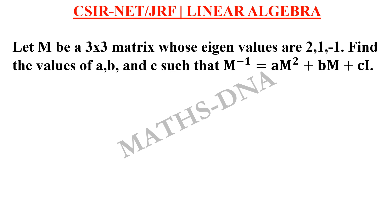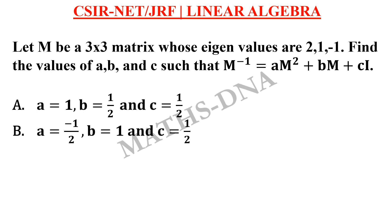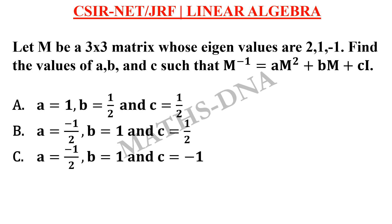The options are as follows. Option a: a equals 1, b equals 1/2, and c equals 1/2. Option b: a equals –1/2, b equals 1, and c equals 1/2. Option c: a equals –1/2, b equals 1, and c equals –1.